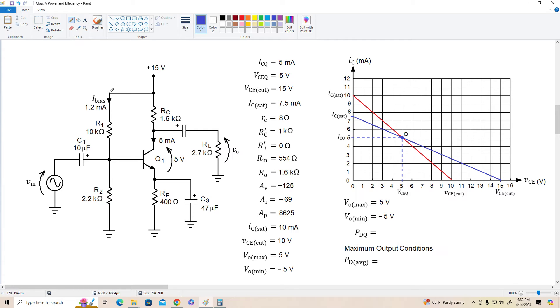For this amplifier we've got VO max of 5 volts, that is we can swing until we reach 10 volts on our AC load line and we can swing from VCEQ down to zero. So we've got a max of 5 volts, a min of negative 5, and PDQ is 5 mils times 5 volts or 25 milliwatts. Our average transistor dissipation at maximum output is 12.5 milliwatts.